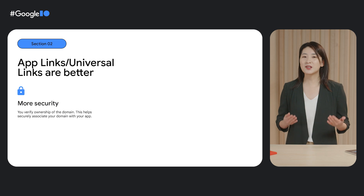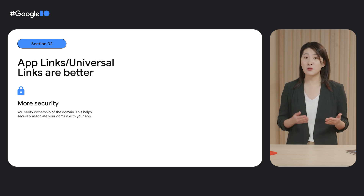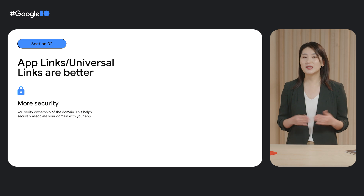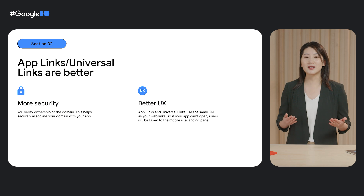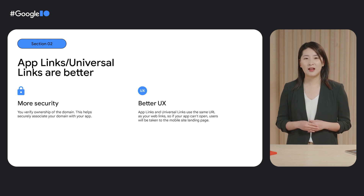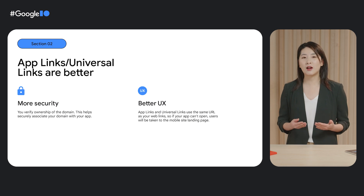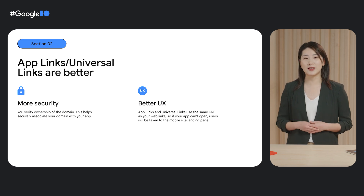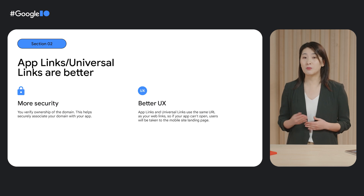They are more secure and specific because you verify ownership of the domain. This helps securely associate your domain with your app. They provide a seamless user experience. App Links and Universal Links use the same URL as your web links, so if your app cannot open, users will be taken to the mobile site landing page.